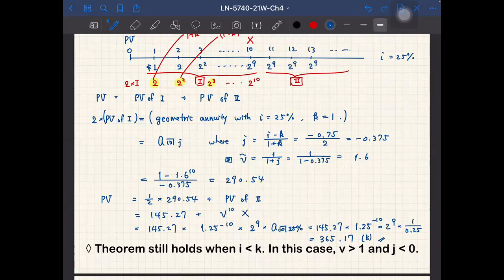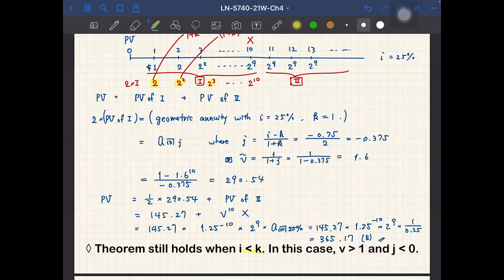So usually K, the multiplier is 1 plus K, so K is larger than i. Basically the present value of each payment blows up. So such, for example, the perpetuity, such perpetuity does have infinite present value, so it's unnatural.